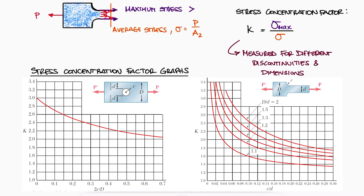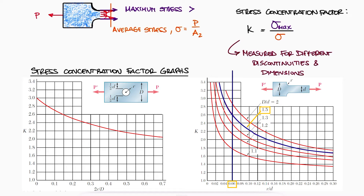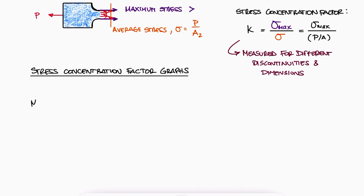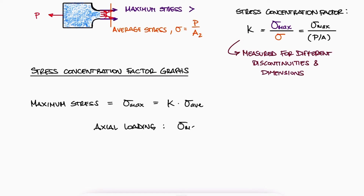For a flat bar with fillets, the x-axis will have the ratio between the radius of the fillet and the width of the bar at the smaller section (r/d), and the different curves correspond to different ratios between the larger and smaller widths. As an example, if r/d is 0.06 and the larger width is 1.5 times the smaller width, the resulting stress concentration factor K shown on the y-axis would be equal to 2.6. Since K is defined as the ratio between the maximum stress and the average stress, the maximum stress will always be K times the average stress expression — in this case, K times P over A.